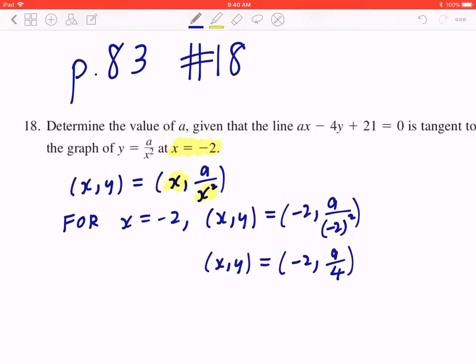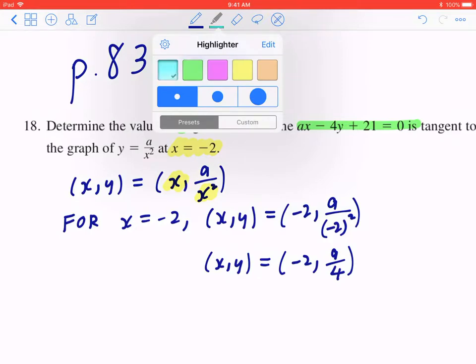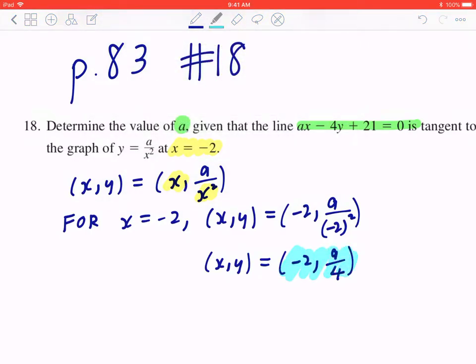Now, the question says find a, and you're given this line. So this is the line that we're looking at: ax minus 4y plus 21 equals 0. And the goal is to find a. Since this line is a tangent to that graph at that point, they both share this point (negative 2, a over 4). So you have to plug x to be negative 2, y to be a divided by 4. And you can express this only in terms of a. At that point, you can solve for a.